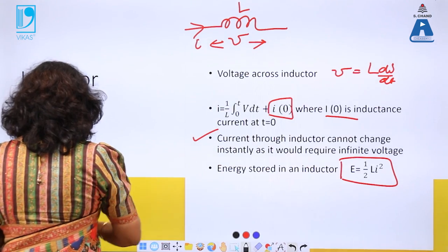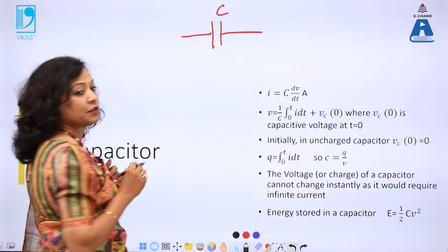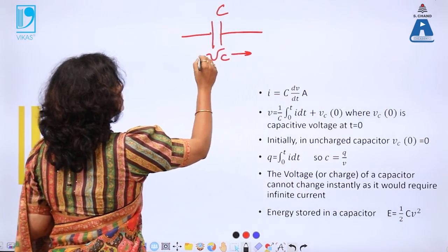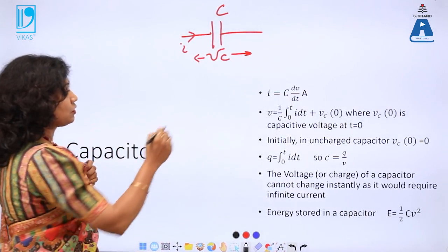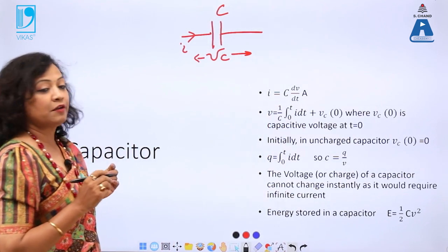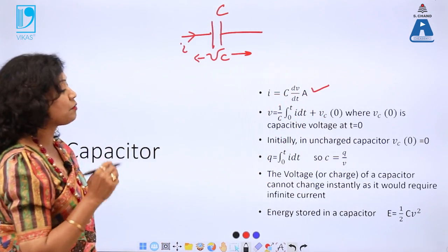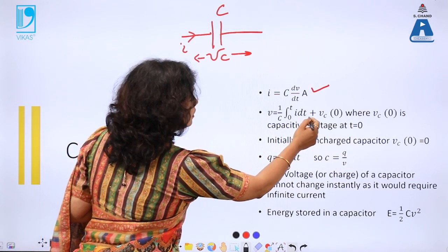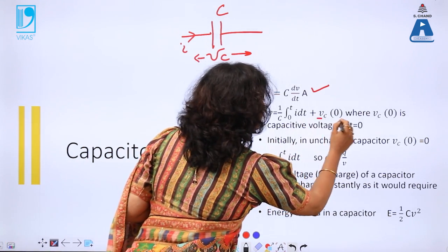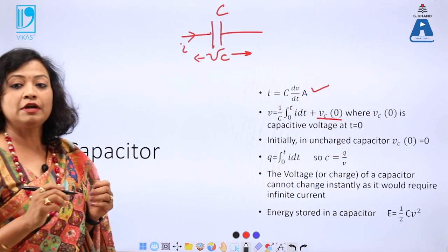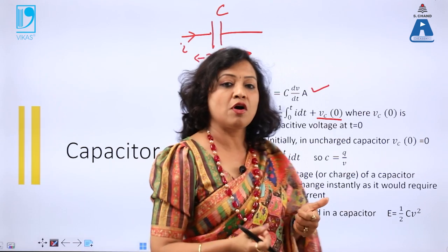The next element is the capacitor, represented by C. Here Vc is the voltage across the capacitor and I is the current flowing through it. The current is given by I = C·dV/dt. Using this equation, I can find voltage: V = (1/C) × ∫i dt, with limits from 0 to T, plus Vc₀, where Vc₀ is the voltage across the capacitor at t = 0.